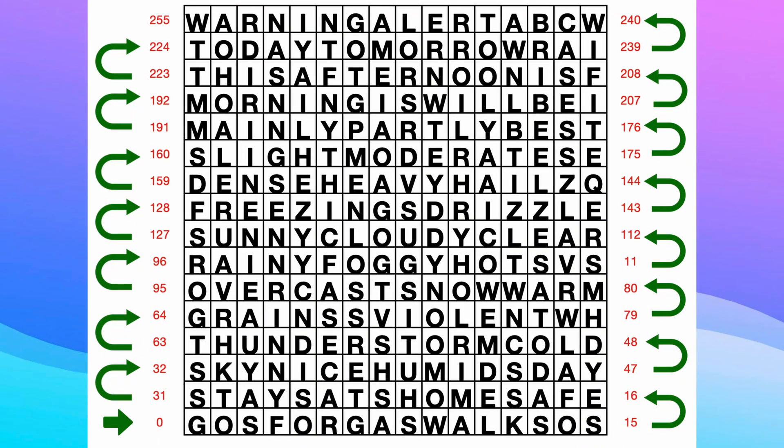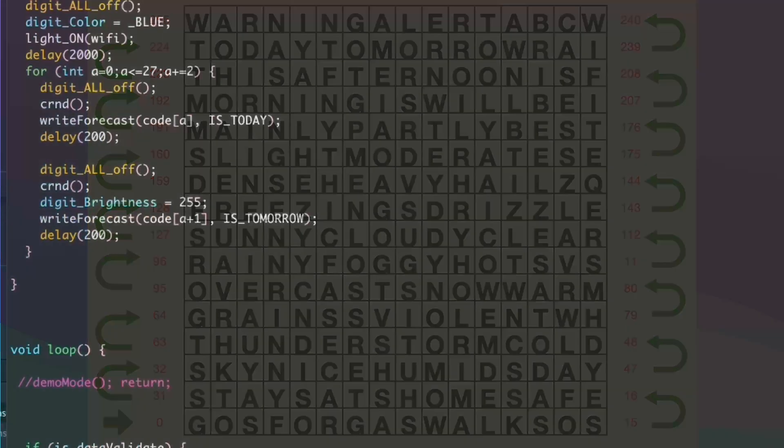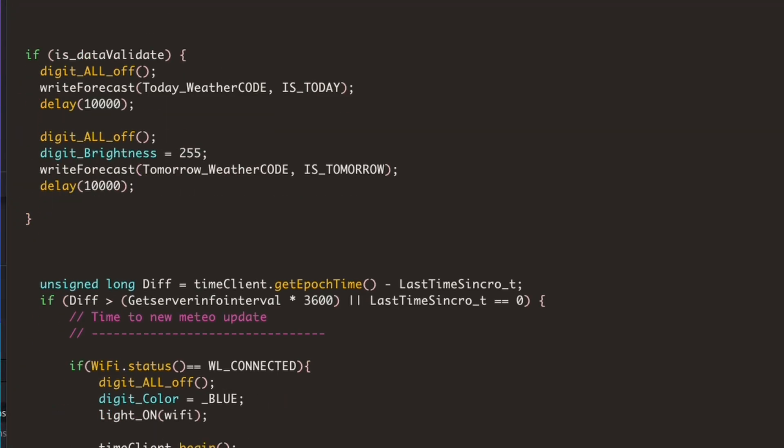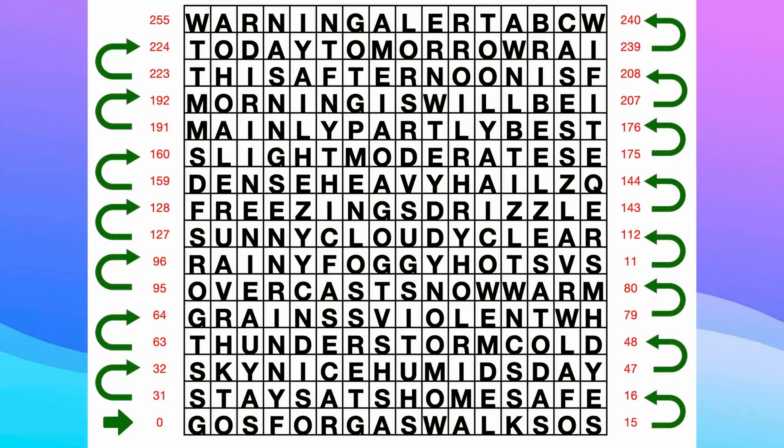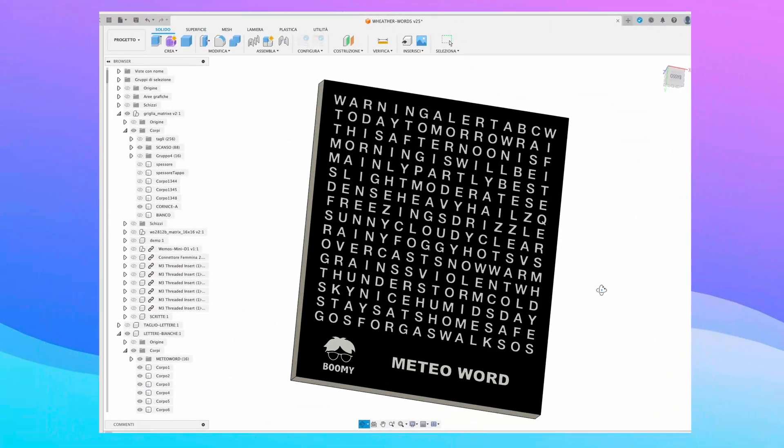Later, when I develop the software for ESP8266, I will have to use this table to determine which LEDs in the matrix should light up corresponding to the words that make up the weather forecast.